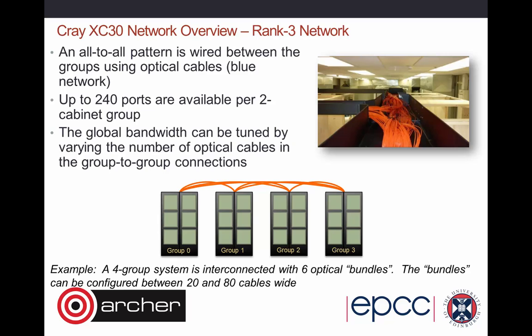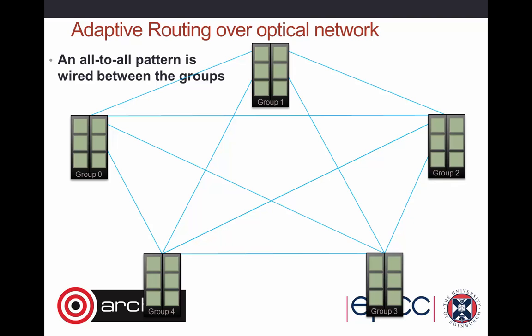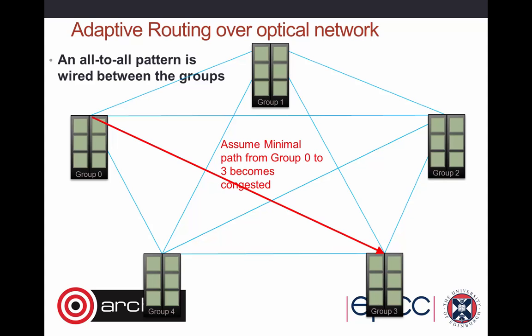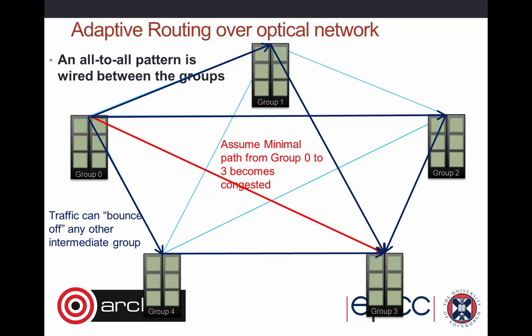Above the group level — which is two cabinets and six chassis, tightly connected by an electrical network — we go to an optical network. This means there are different characteristics of connectivity when going between different groups versus within a group. You can actually tune the bandwidth here by paying more for optical cables. On Archer we have 12 groups and 24 cabinets all connected by this optical network. The same adaptive routing principle applies: although there's a direct route between different groups, the system will bounce off other groups if that route becomes congested, providing very good connectivity and helping avoid congestion.